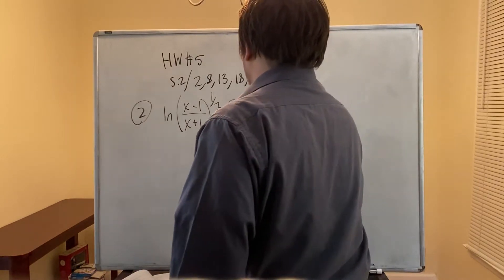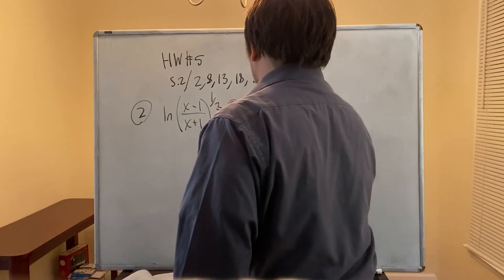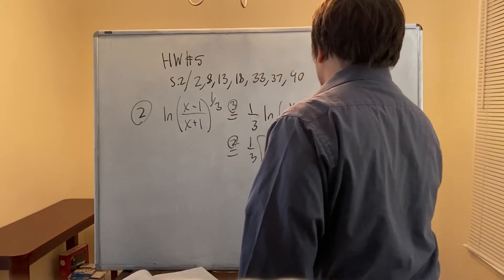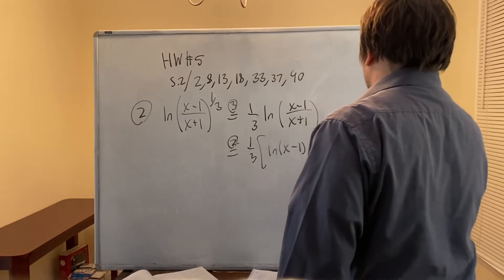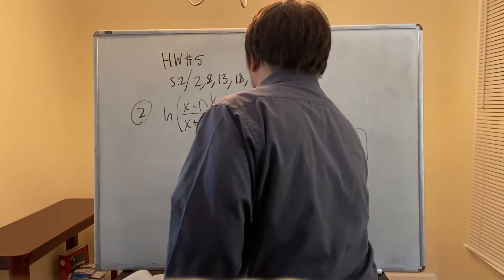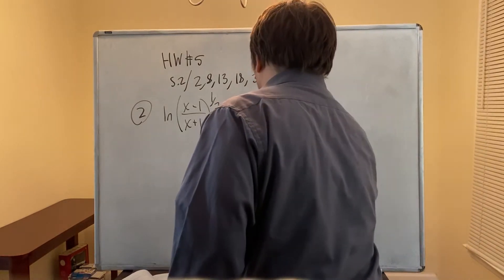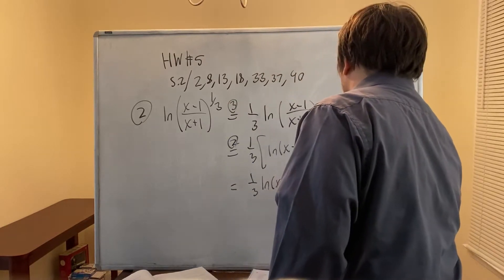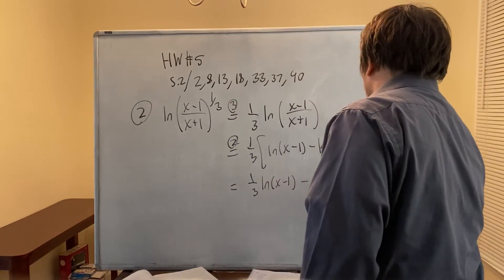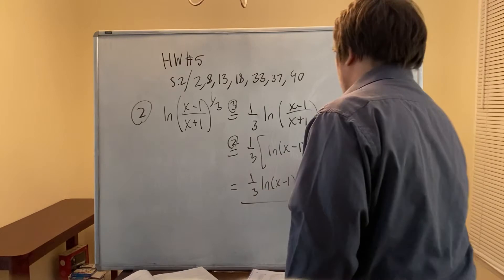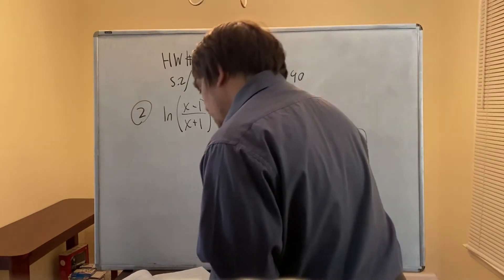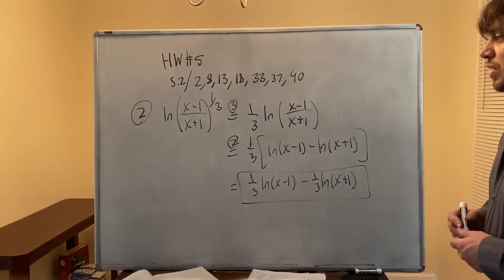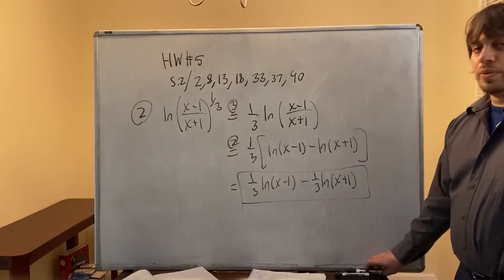By the second law, this is one-third times [ln(x minus 1) minus ln(x plus 1)]. Distributing the one-third gives one-third ln(x minus 1) minus one-third ln(x plus 1). That is the expanded form — that's the answer to number 2.